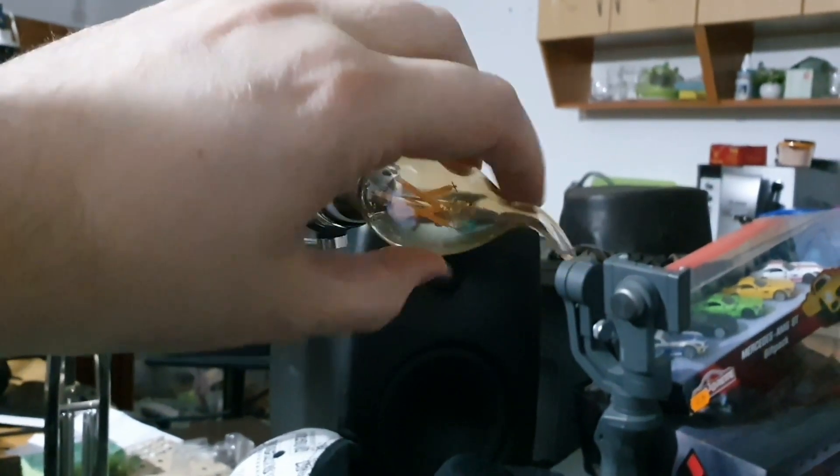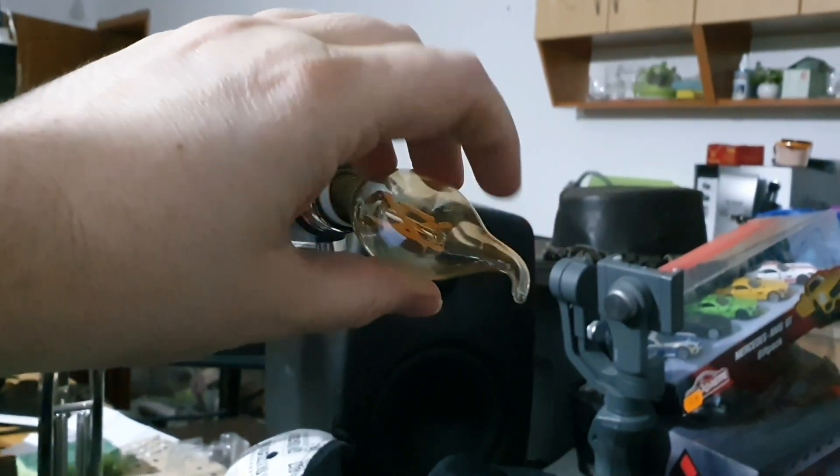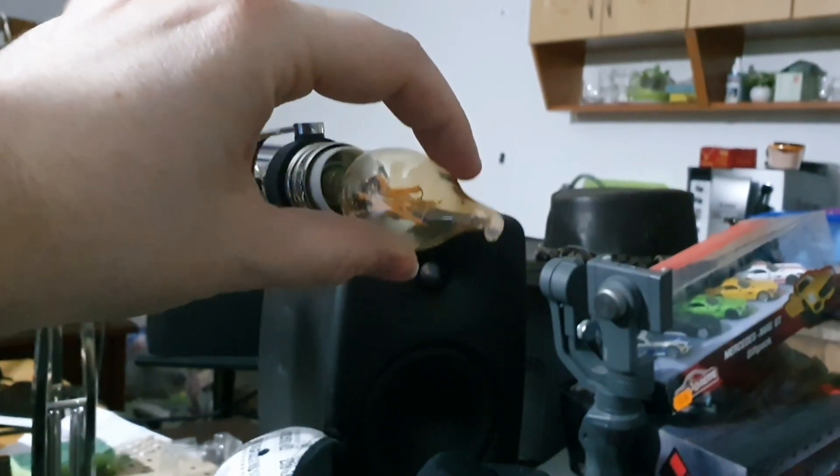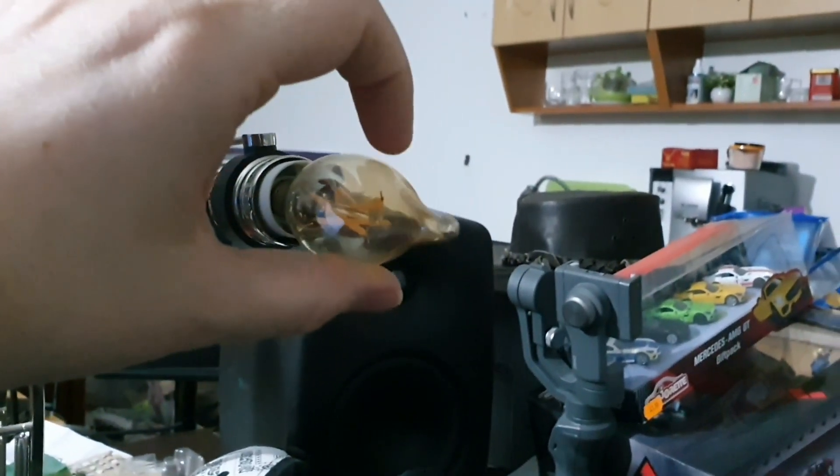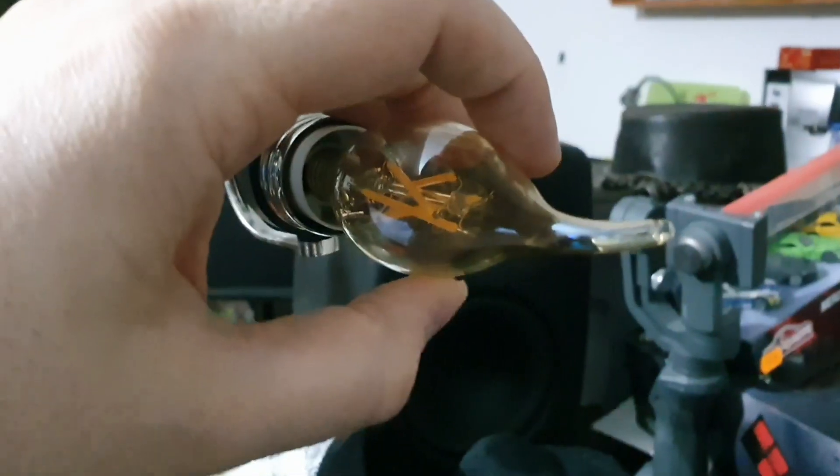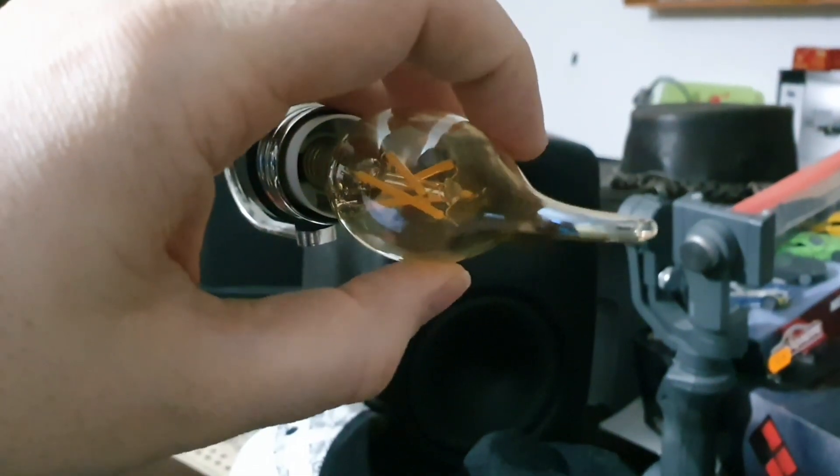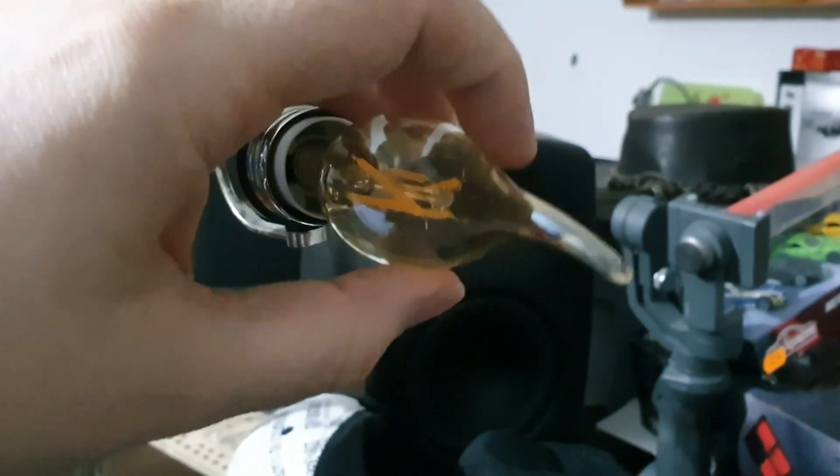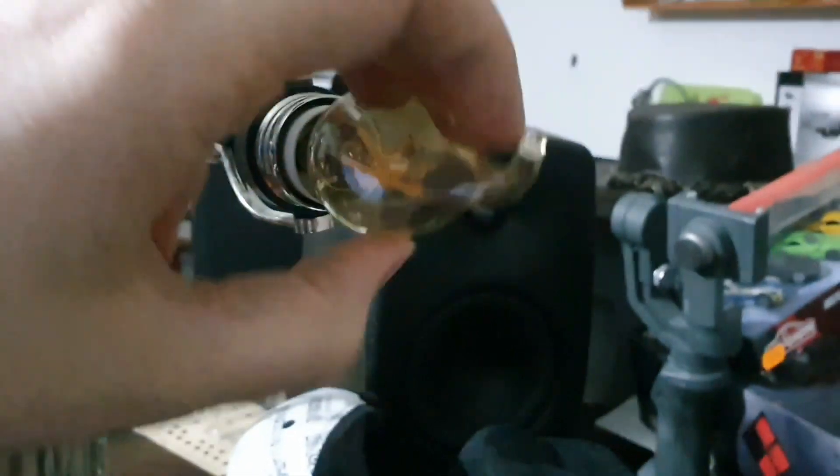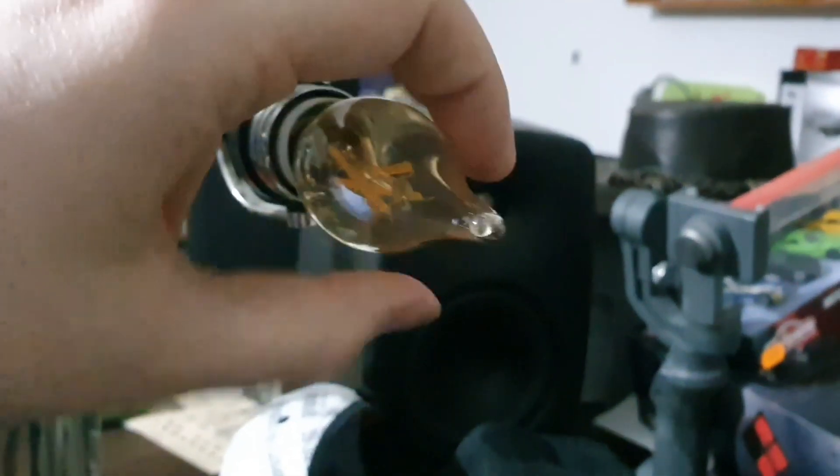Line up the base of the bulb with the socket and gently press the bulb into the socket while turning it clockwise. Make sure that the bulb is securely screwed and not loose from its position.